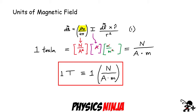The current has units of amps. The numerator of the vector term has units of meters from dL, and the denominator has units of meters squared from r squared. Putting everything together, we get newtons per amp per meter — which we call a Tesla. So one Tesla equals one newton per ampere per meter.